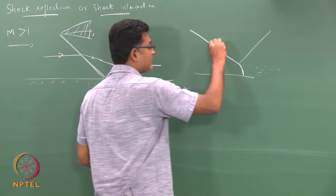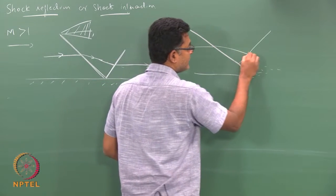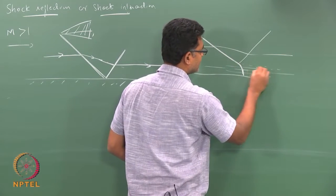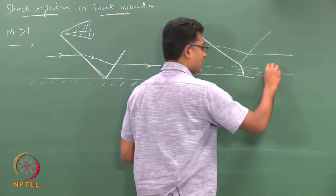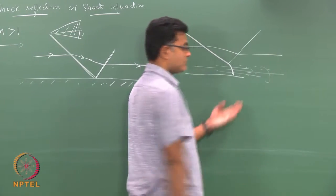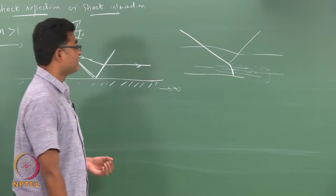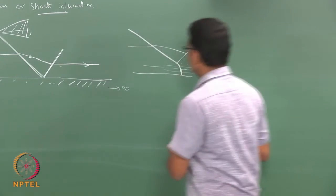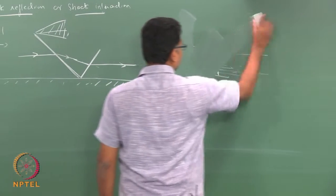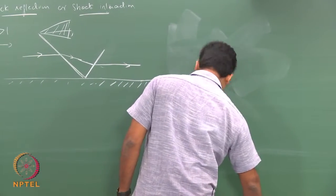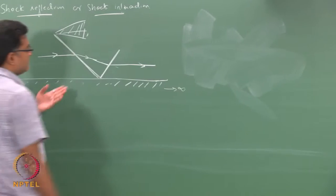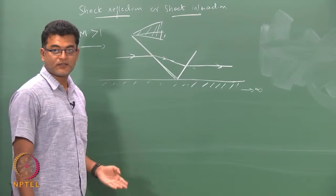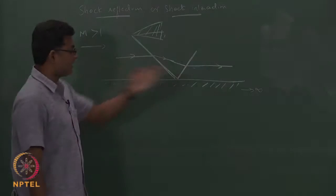You can have an oblique shock going one way, or streamlines going another way within the boundary layer. If you consider viscosity, you can also have separations. But let us not discuss that — we will discuss the first case, which is the inviscid flow, and restrict ourselves to a regular reflection from the surface.